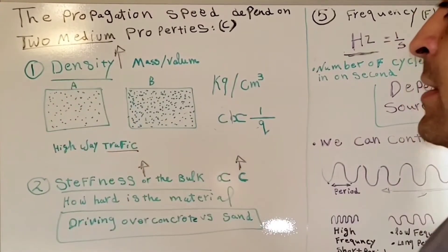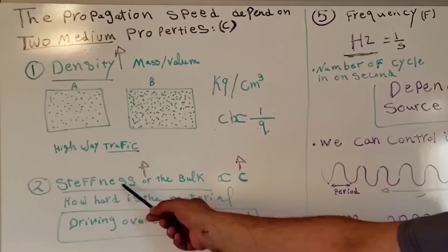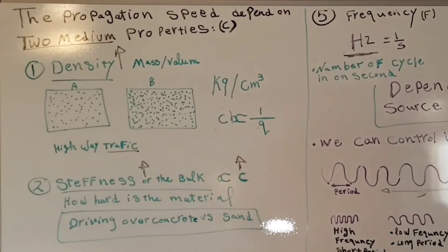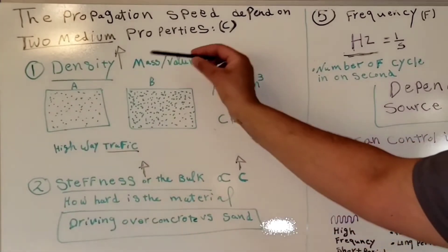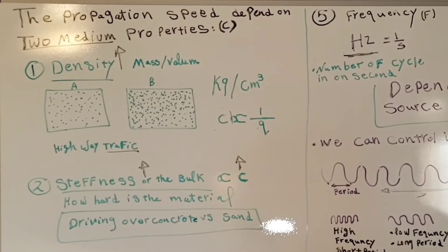Density is the concentration of the material in the volume. Remember, density is one of the acoustic variables and we said that density equals the mass divided by the volume.